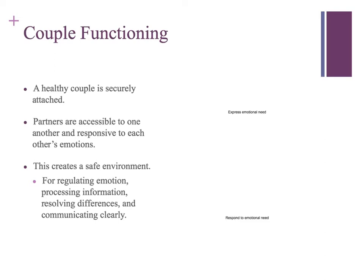EFT envisions a healthy couple as one that is securely attached — the partners are available to one another and respond to one another's emotional needs. It's essentially a cycle where somebody expresses an emotional need and then someone responds to that need. It doesn't mean you always meet the other person's need, because that wouldn't be very adaptable and therefore wouldn't be considered healthy from a systemic standpoint.